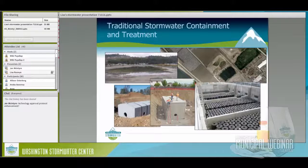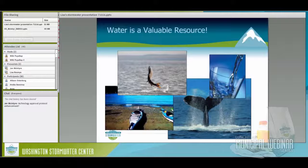Traditional stormwater containment and treatment is very expensive and uses a large amount of land. Rethinking how we manage and treat water — how can we do a better job protecting that valuable resource? A huge amount of money is spent managing our water. The economy and health of people worldwide depend on water — livestock and crop production, recreation, drinking water. If we don't have it, we won't live very long.